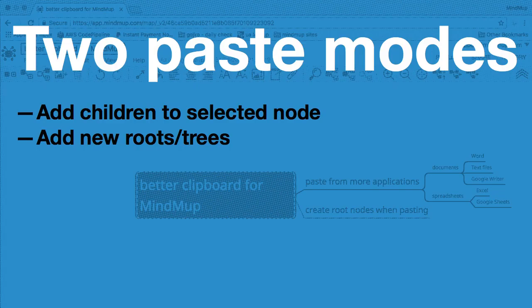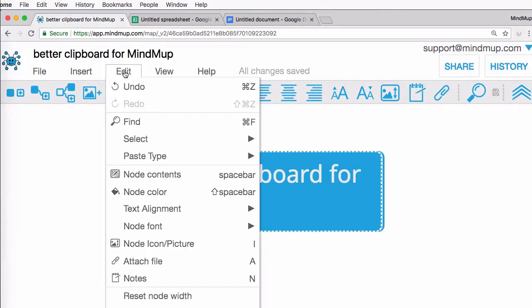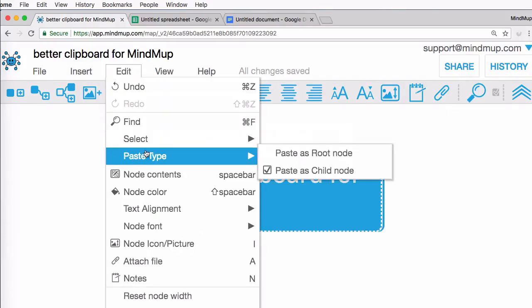Oh, and one more thing. From this week, you can choose how you want to paste the content — create child nodes of the current idea, or create completely new subtrees. From the main application menu, select Edit, Paste type, Paste as root node.